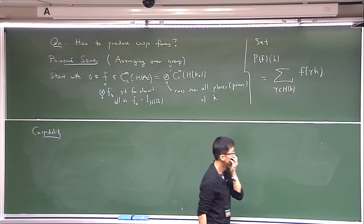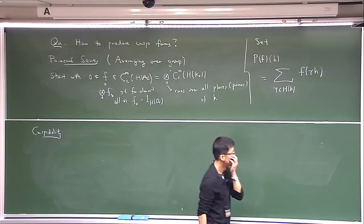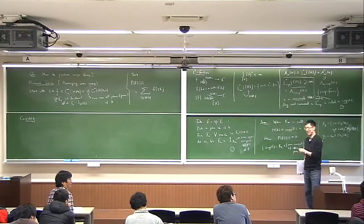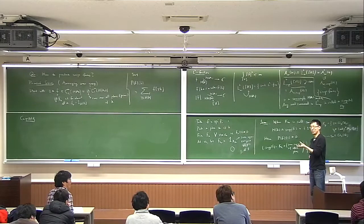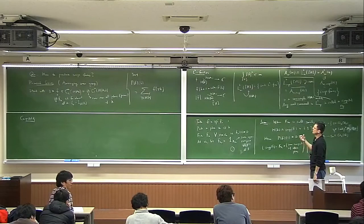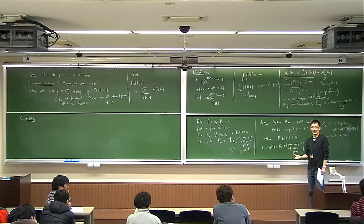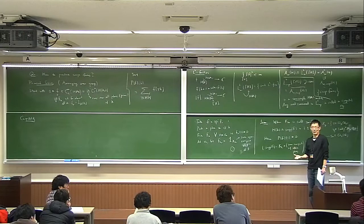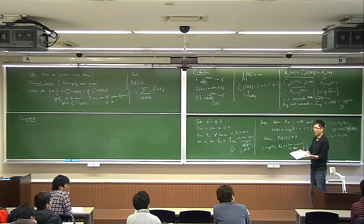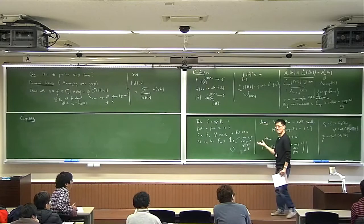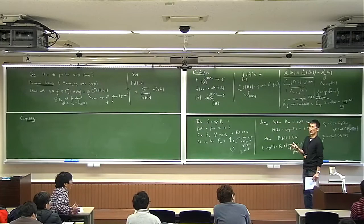In the approach to number theory using adeles, the key point is to elucidate the local-global passage. Many results we want to prove in number theory over global fields have analogs over local fields, and in fact you should understand these local analogs first before trying to piece together the result to get something over global fields. So here we introduce the notion of cusp forms as a concept over global fields, and we ask: is there an analog of this concept over local fields?